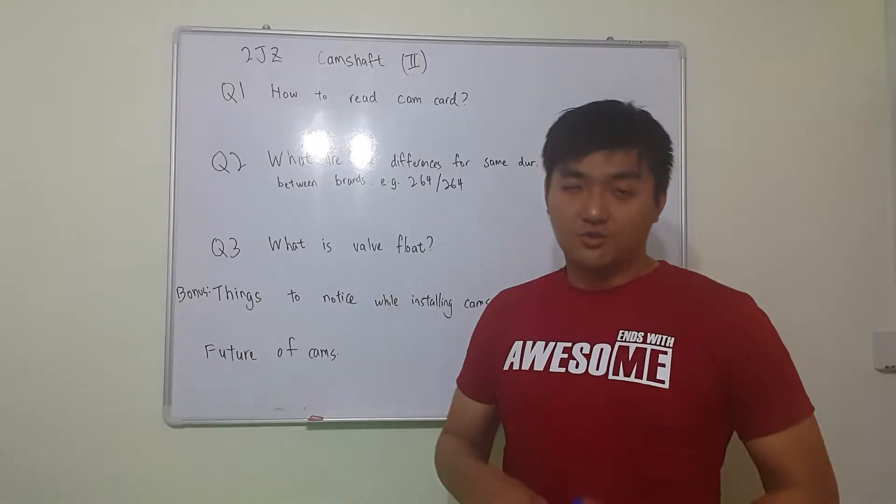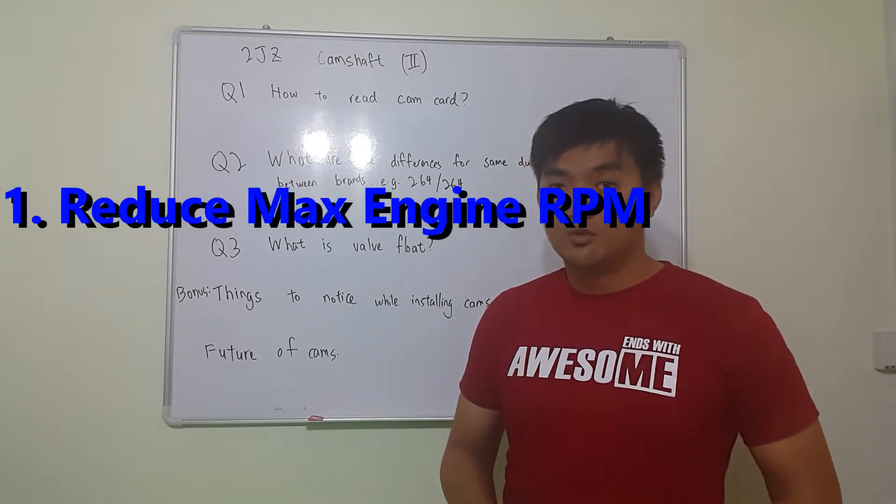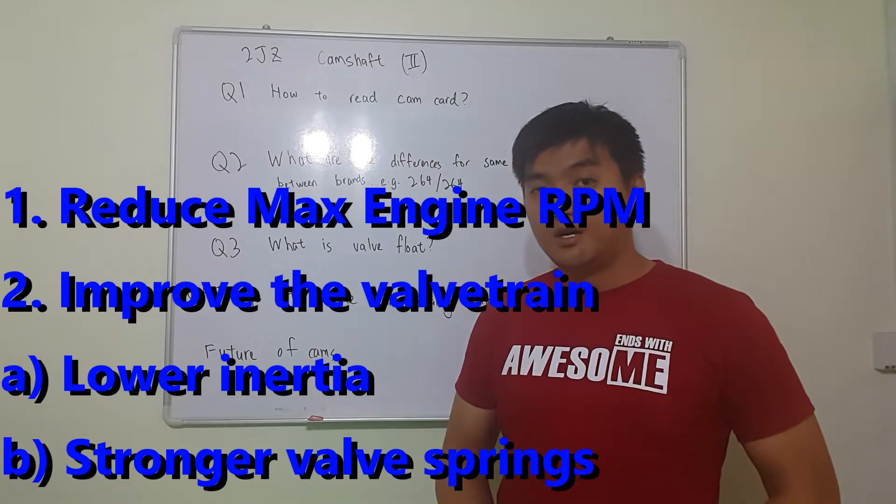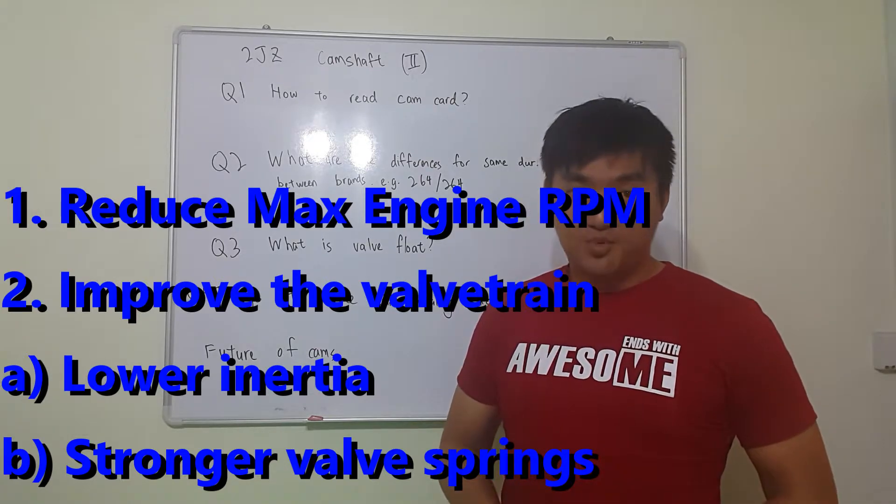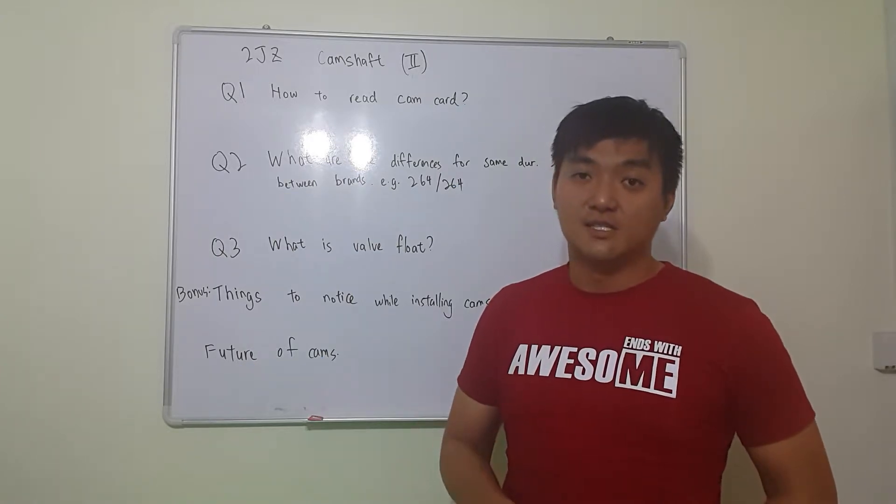We have two options. One is you reduce your RPM. Two is you replace your valve train to become lighter, lower inertia, and maybe higher spring rate so that in order to press the valve onto each seat.